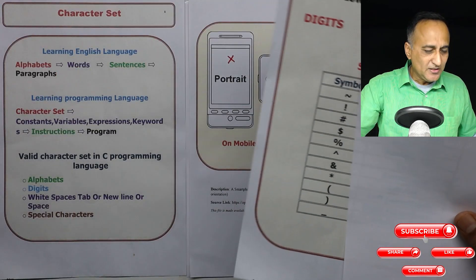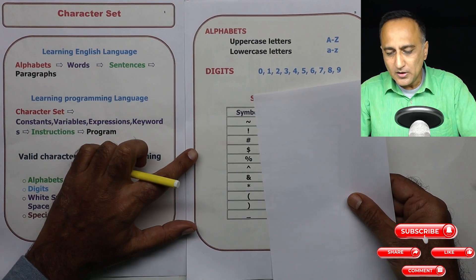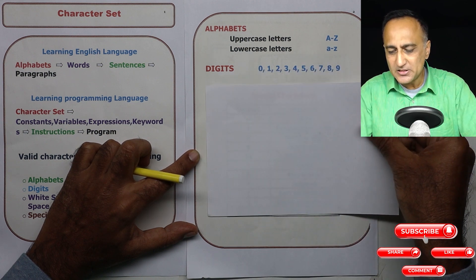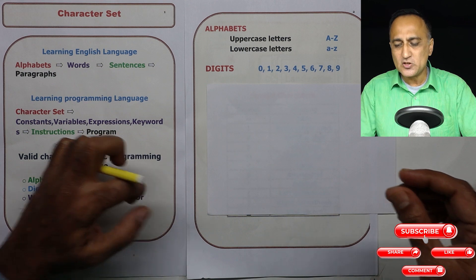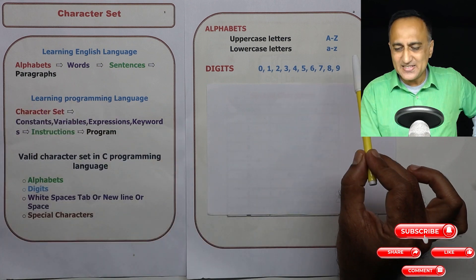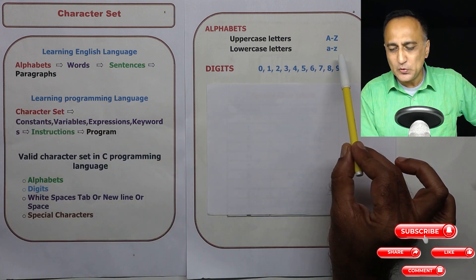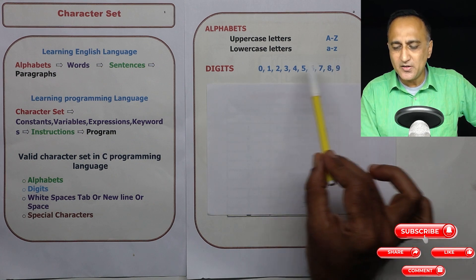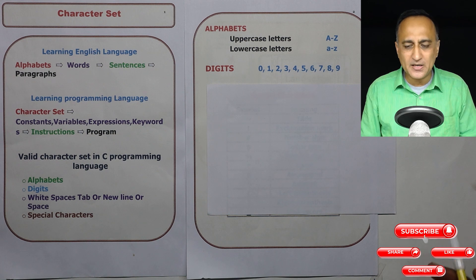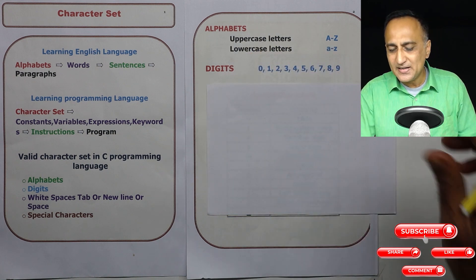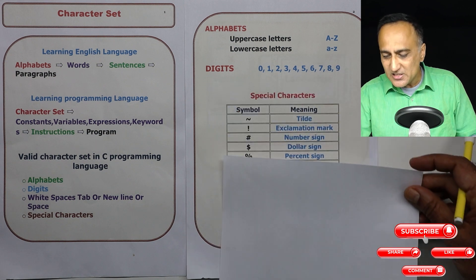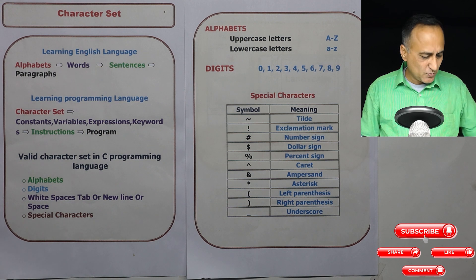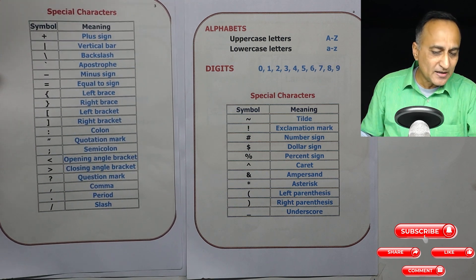The first valid character set is alphabets. Alphabets consist of uppercase letters A to Z and lowercase letters A to Z. Digits consist of numbers from 0 to 9, and using their combination you can create different numbers. Your program will consist of alphabets and digits, followed by some special characters.